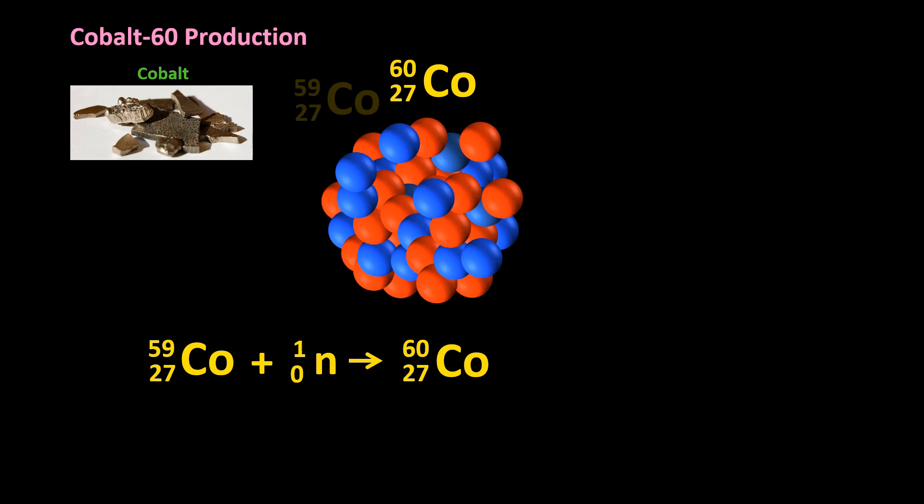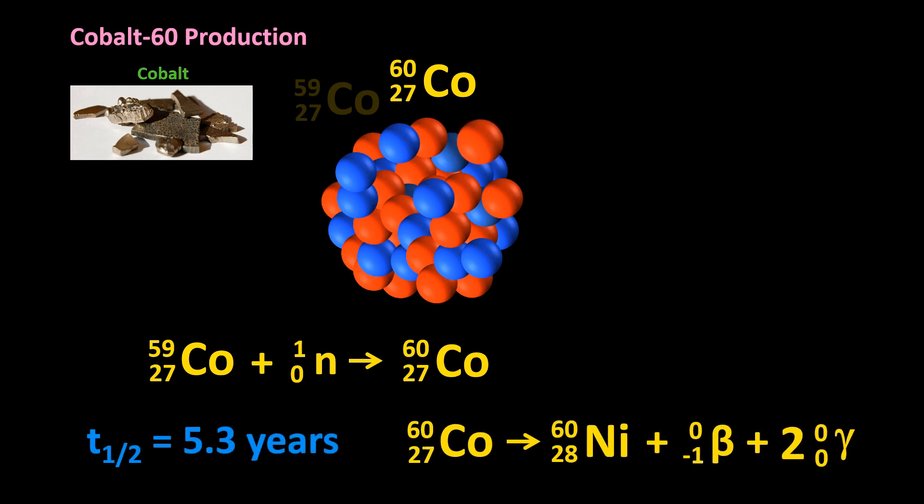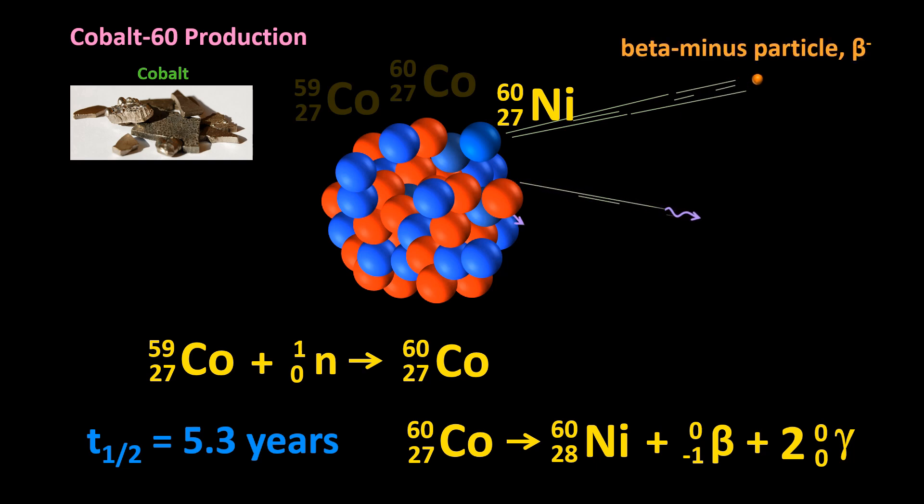That one extra neutron changes everything. The cobalt-60 then decays with a half-life of 5.3 years into stable nickel-60 by releasing a beta minus particle and not one but two gamma rays. It's the gamma rays that kill the germs in the sterilization plant. I haven't actually mentioned that cobalt-60 releases two gamma rays until now because I wanted to keep it simple. I think we're now well past simple.